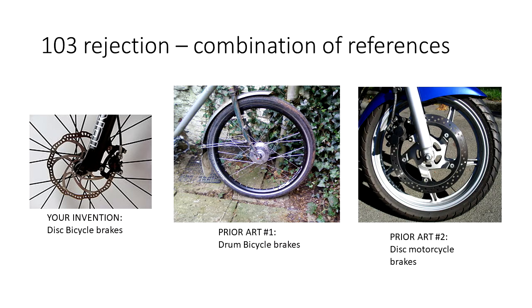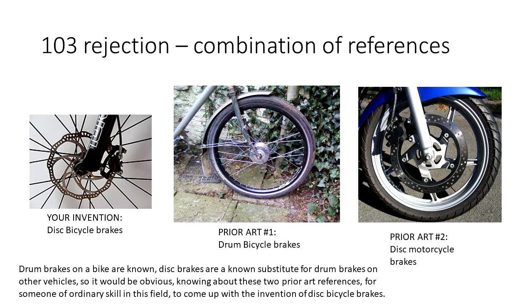And doing more searching, they find another prior art reference for a motorcycle with disc brakes. So we have our invention — a bike with disc brakes — and the prior art references include a bike with drum brakes and a motorcycle with disc brakes. A rejection rationale from the patent office may look something like this: drum brakes on a bike are known; disc brakes are a known substitute for drum brakes on other vehicles; so it would be obvious, knowing these two prior art references, for someone of ordinary skill in this field to arrive at disc bicycle brakes. This is a simplified example, but it illustrates how references can be combined to make an obviousness rejection.